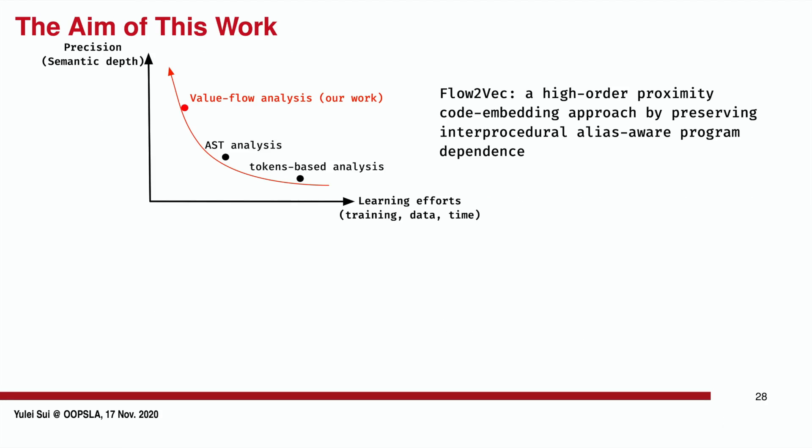The goal of this work is to push the boundary of existing code embedding techniques to achieve more precise results with less learning effort by extracting and embedding deep structural information of code. This figure shows the workflow of flow-to-vec, which accepts the LLVM intermediate representation as input to build an interprocedural value flow graph, or IVFG, of a program.